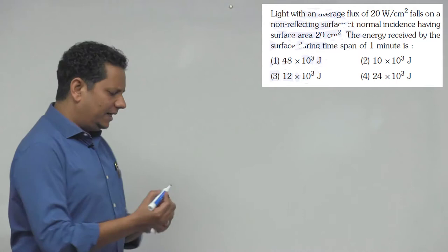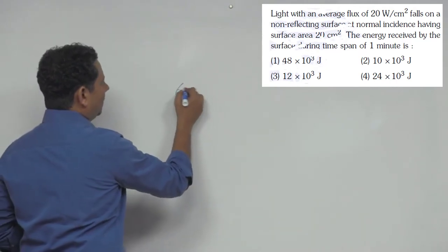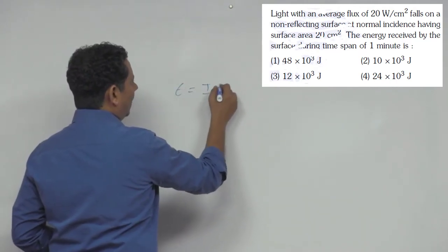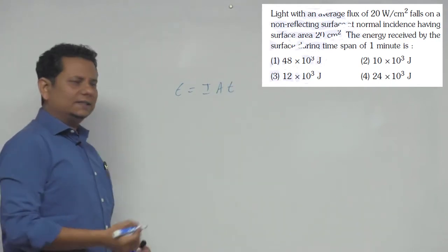This will be simple, direct formula to use. Energy will be equal to I·A·t. We can directly calculate the value.